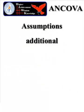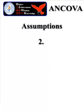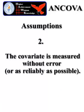So now the new assumptions specific to ANCOVA. Number one: the covariate has to be measured before you do anything in your experiment. We did record these rats' ages before we gave them any smoothies or drugs. Second assumption: the covariate has to be measured without error, or as reliably as possible. In our problem, the covariate is a continuous variable.